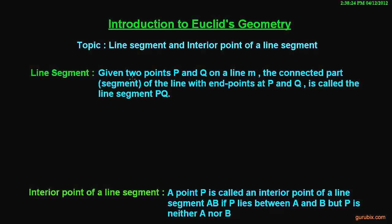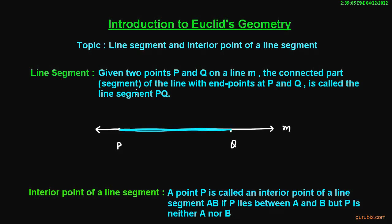We can define a line segment like this: given two points P and Q on a line M, suppose we have a line M and we have two points on it, point P and point Q. This connected part, from here to here, is called the segment with end points P and Q. We can write a segment P, Q like this: P, Q.